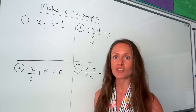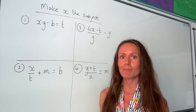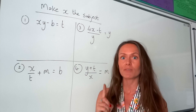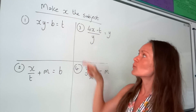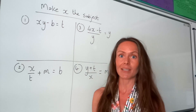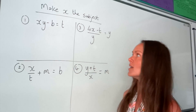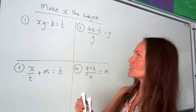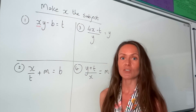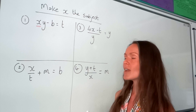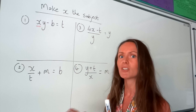Today I'm going to show you how to change the subject of a formula. It sounds a bit confusing, but all it means is we're going to be rearranging equations to get one of the letters by themselves. In these ones, we're making x the subject, so we need to rearrange the equations to get x equals — everything that's not x will be on the other side of the equal sign. It's very similar to solving linear equations. It's exactly the same method, except you don't even need to calculate anything — you're just rearranging the equation.